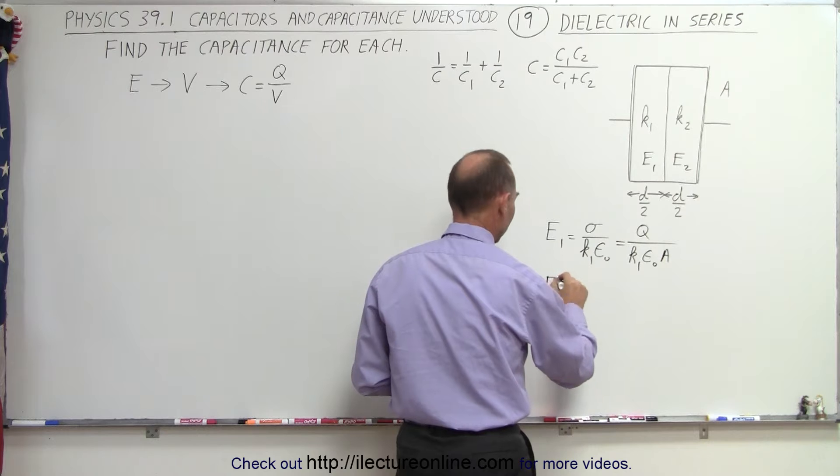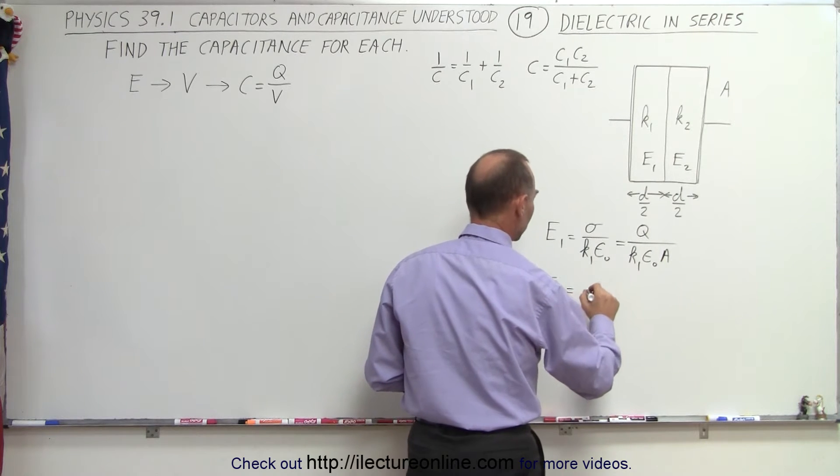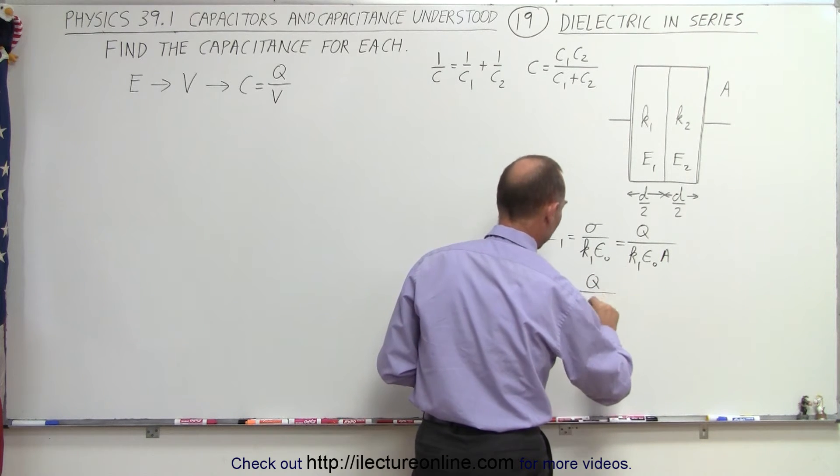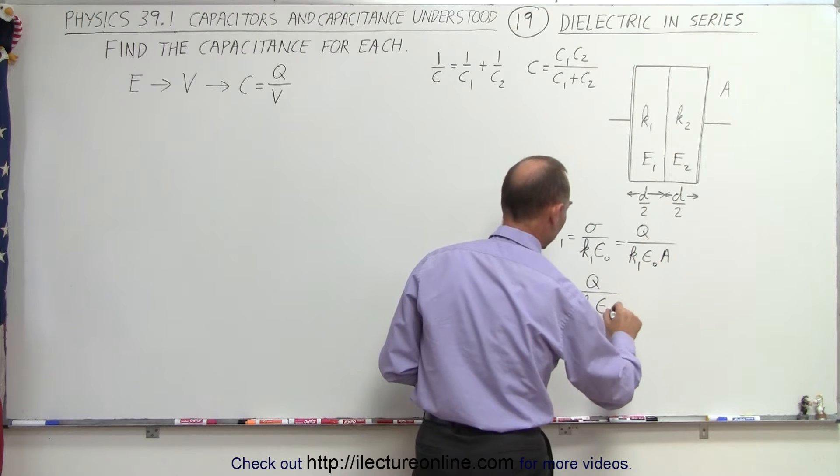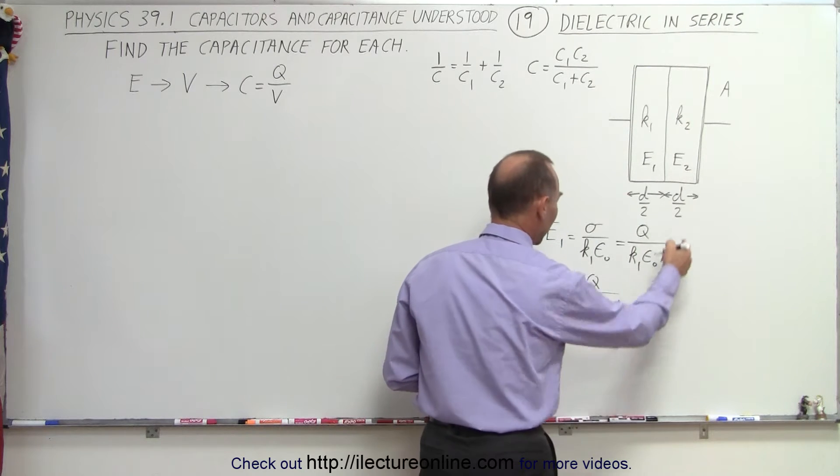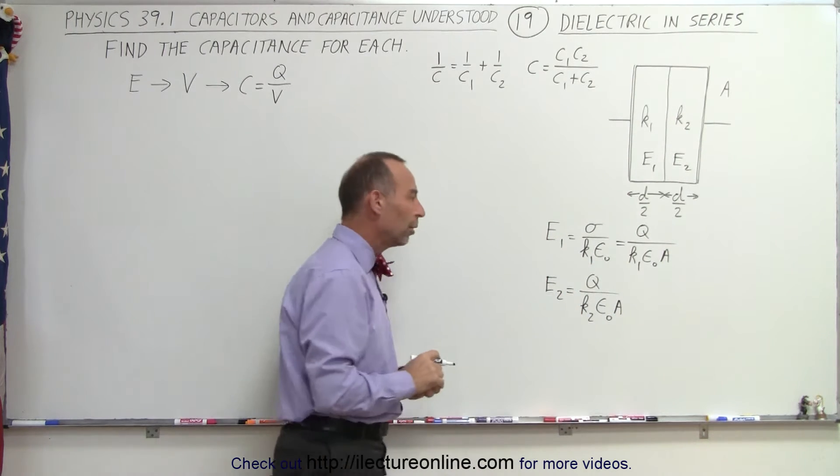And in the same way, we can find the electric field for the second portion. So this would be equal to q divided by k2 epsilon naught times A. So now we have the electric field of both portions.